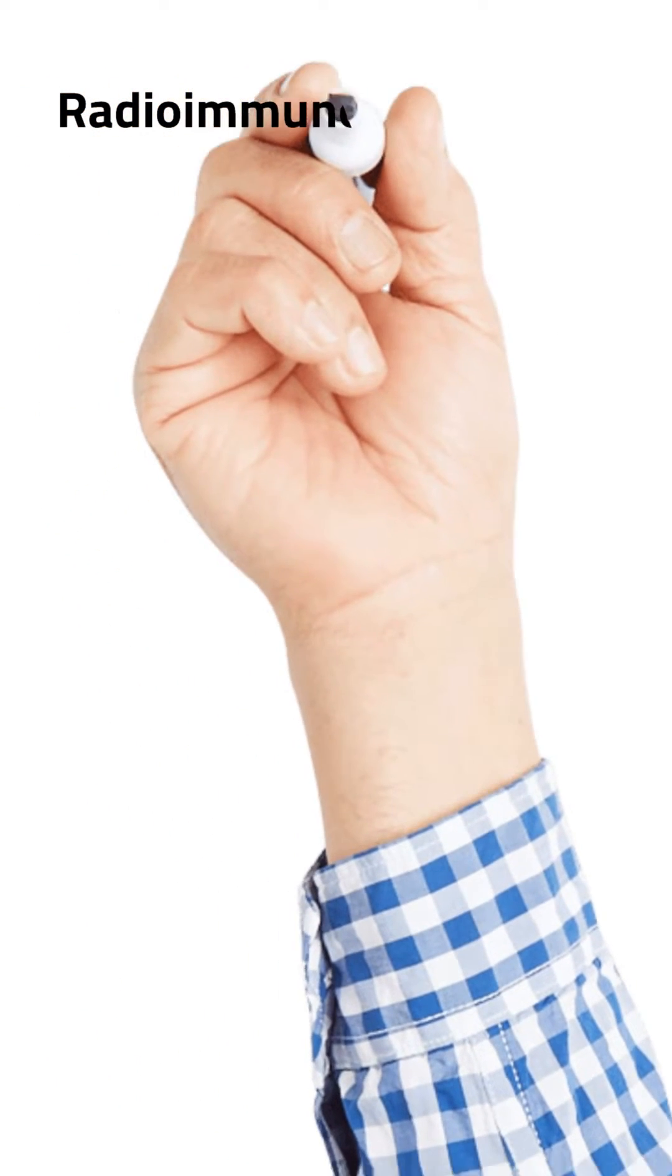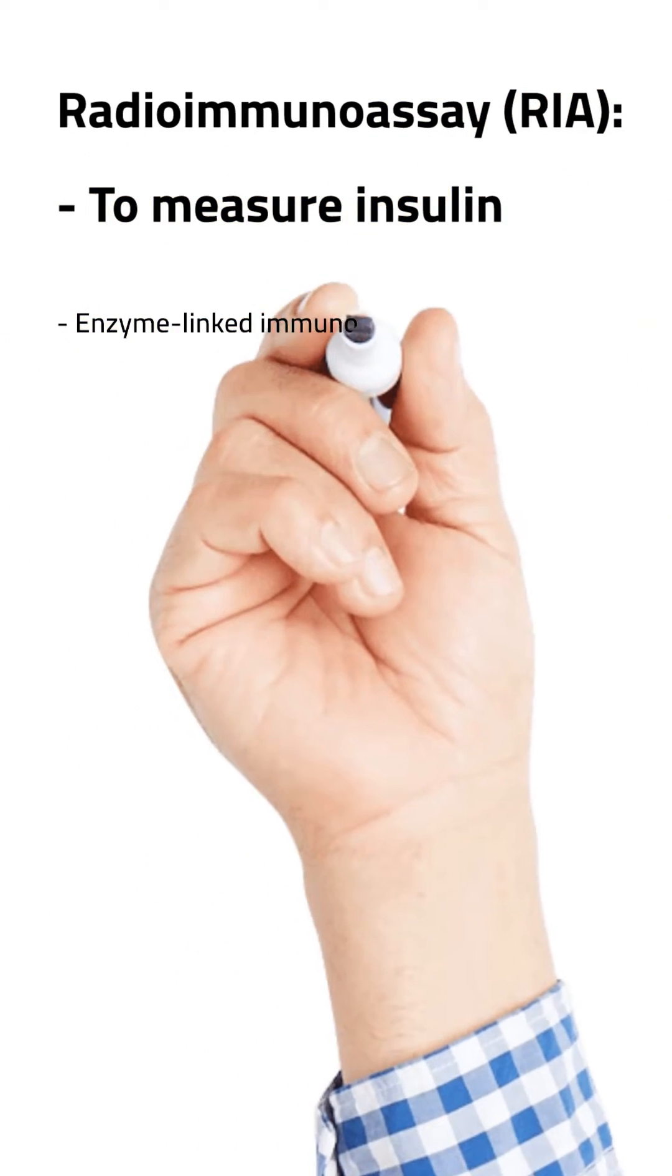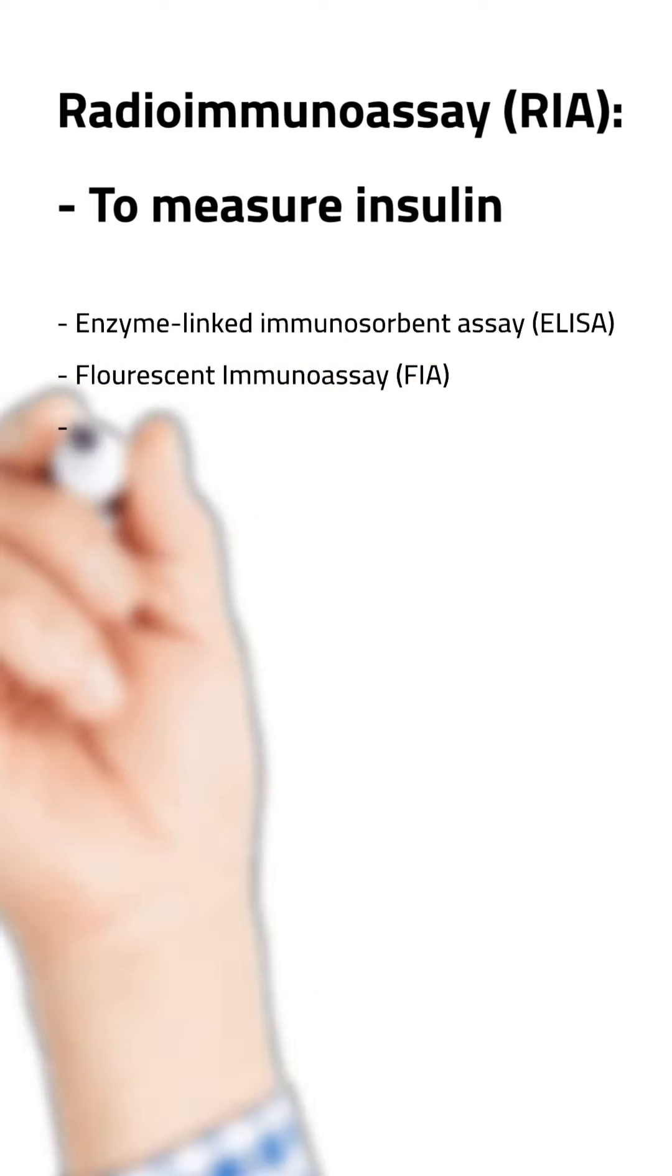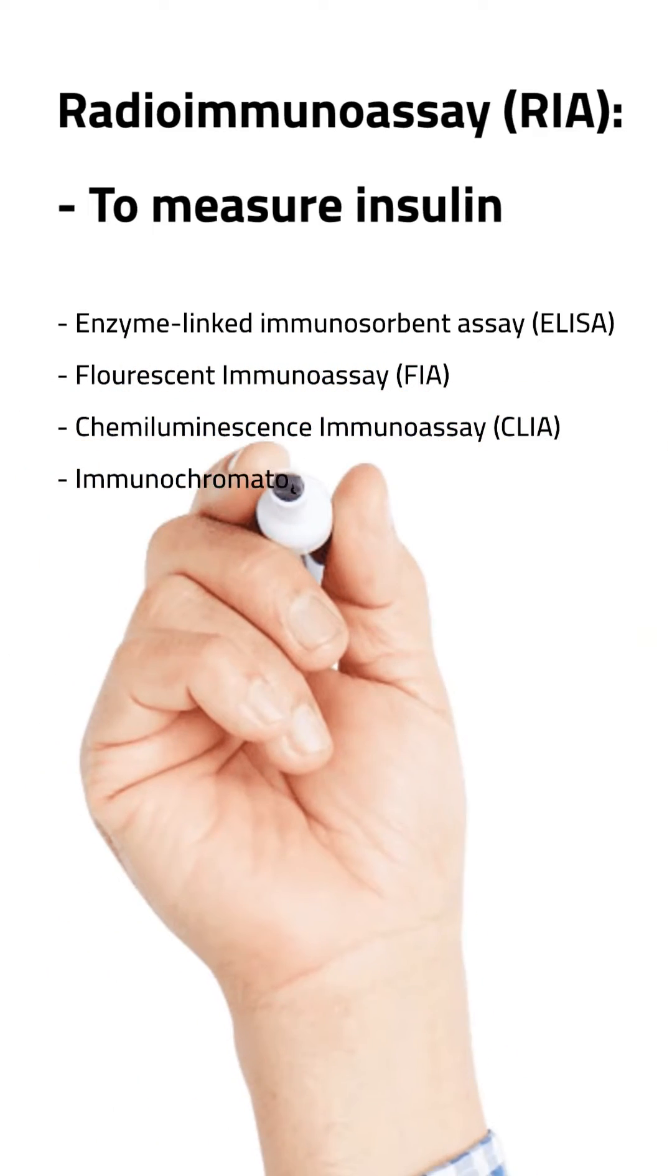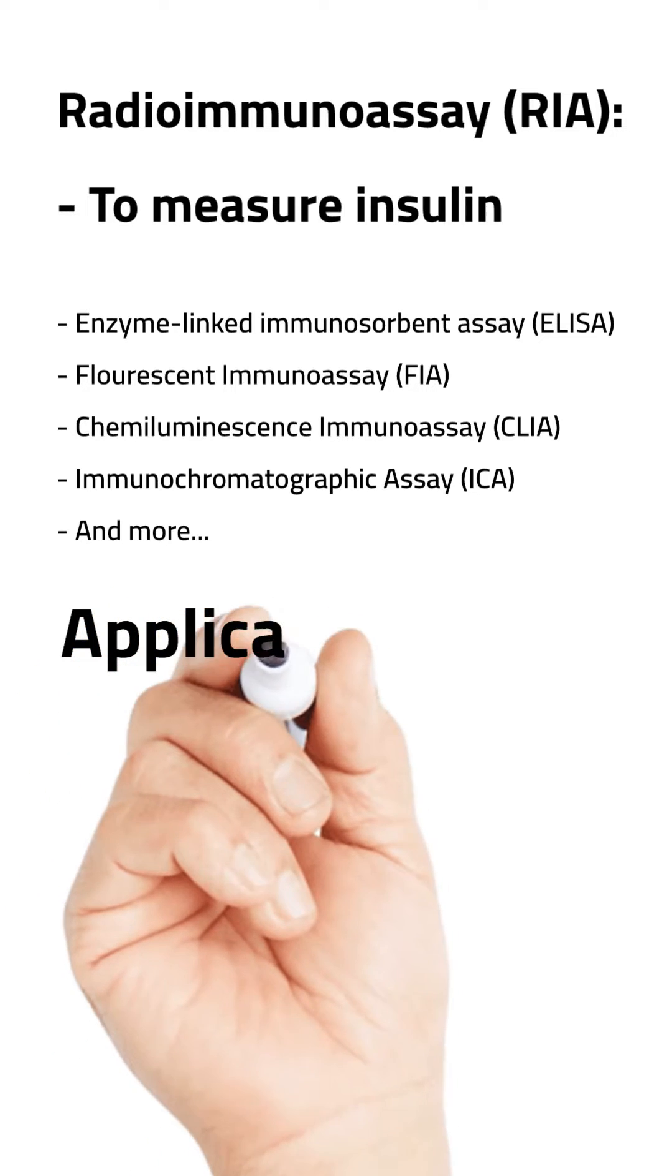The first application of immunoassays in clinical diagnostics began with the development of radioimmunoassay to measure insulin in biological samples. This breakthrough paved the way for the development of several other techniques including enzyme-linked immunosorbent assay, fluorescent immunoassays, chemiluminescent immunoassay, immunochromatographic assay and the list goes on.